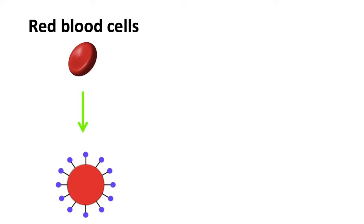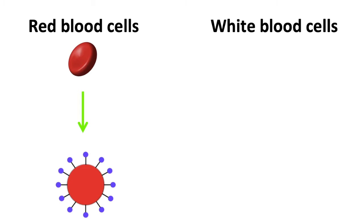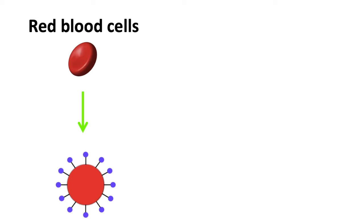Red blood cells are also known as erythrocytes. They have proteins on the cell membrane called antigens. These antigens are markers on the cells which allow them to be identified by white blood cells, so the white blood cells can identify these red blood cells as being part of the body's own cells.